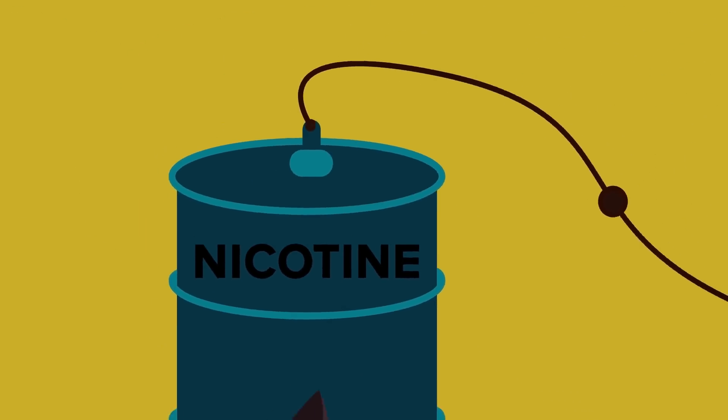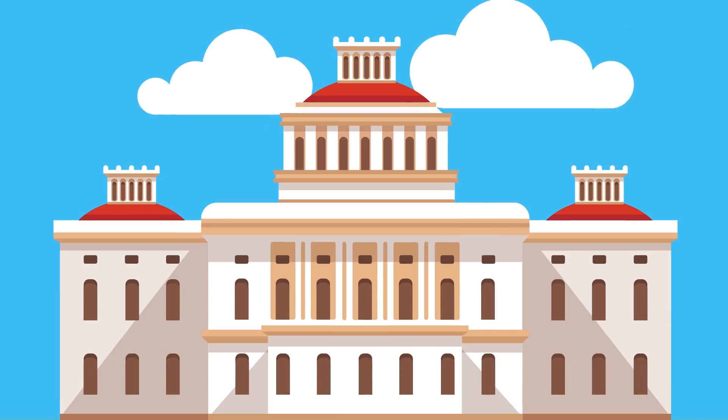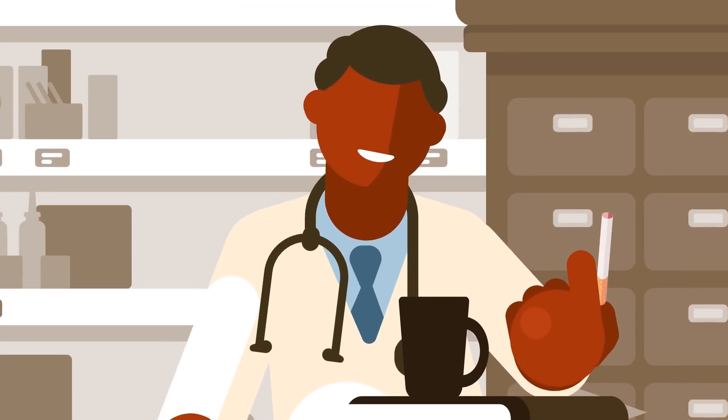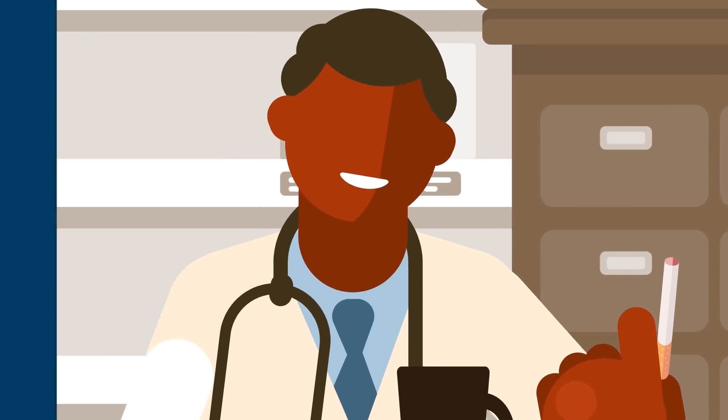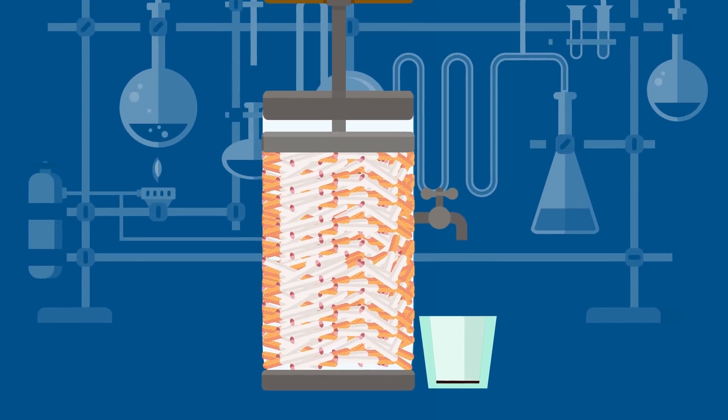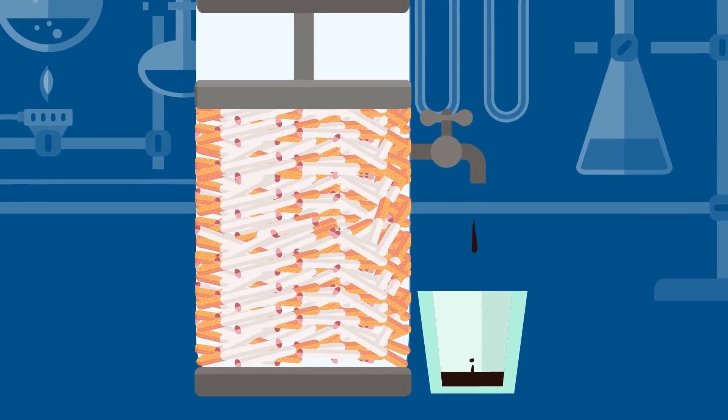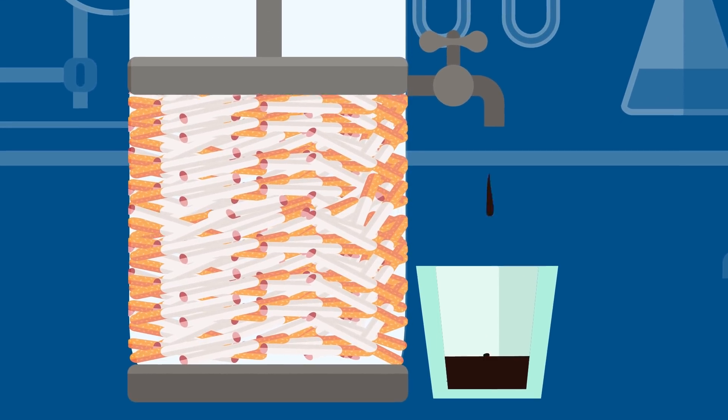A nicotine overdose is one of the possible negative effects of smoking 1,000 cigarettes at the same time. The National Institute on Drug Abuse reports that the average smoker takes in 1 to 2 milligrams of nicotine per cigarette. If you smoke 1,000 cigarettes at the same time, you will receive 1,000 to 2,000 milligrams of nicotine.